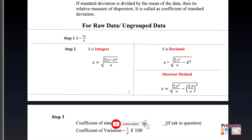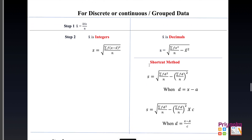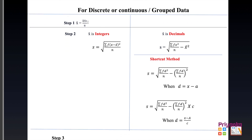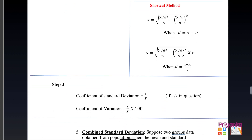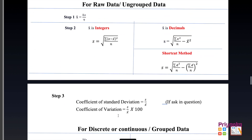Now the information turns to discrete and continuous data — all formulas remain the same, but frequency is included. In step 1 for raw data we use sigma X directly; here we use frequency times X. If the mean is an integer use the first formula; if decimal, use the alternate. The shortcut formulas also apply. Step 3 finds the coefficient of standard deviation, and if the coefficient of variance is asked, the same formula applies.